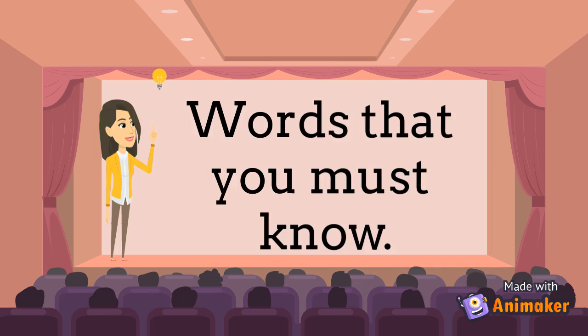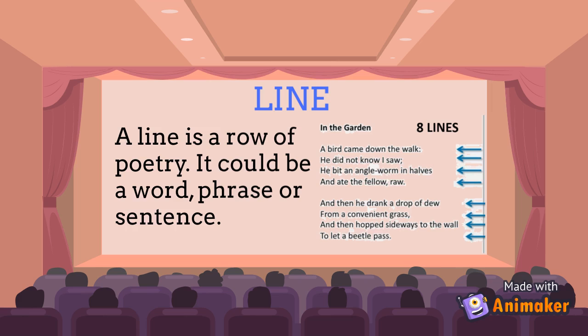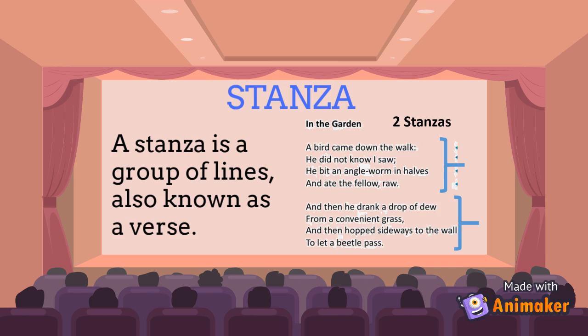Here are some poetry words that you must know. Line: a row of poetry — it could be a word, phrase, or sentence. Stanza: a group of lines, also known as a verse.